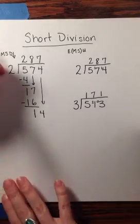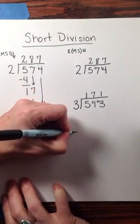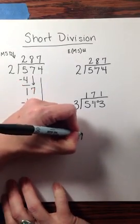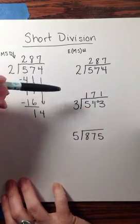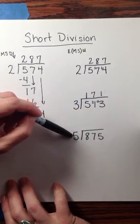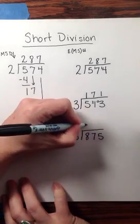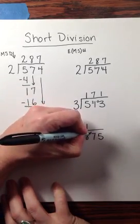And then our final practice problem is dividing 5 into 875. So once again, estimate 5 would fit into 8 one time, with 3 remaining.